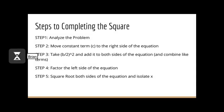There are five steps to completing the square. Step one is to analyze the problem. Step two is to move the constant term c to the right of the equation. Step three is to take b over 2 squared and add it to both sides of the equation — this is why it's called completing the square, because we complete the square by squaring b over 2. Step four is to factor the left side of the equation. And the final step is to square root both sides of the equation and isolate x.